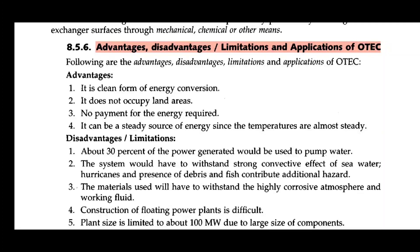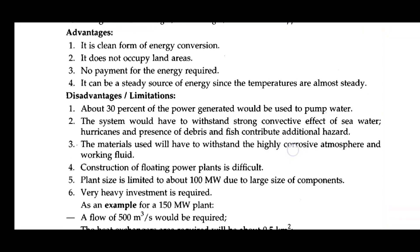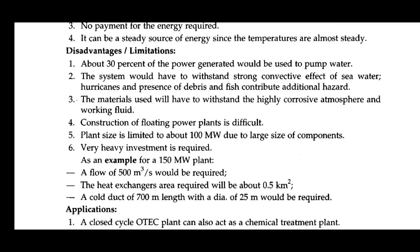Disadvantages of OTEC: about 30% of the power generated would be used to pump water. The system would have to withstand strong convective effects of sea water, hurricanes, and the presence of debris. Fish contribute additional hazards. The materials used will have to withstand a highly corrosive atmosphere and working fluid. Construction of floating power plants is difficult. The plant size is limited to about 100 MW due to the large size of components. Very heavy investment is required.